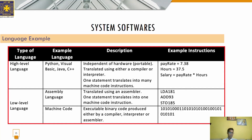An interpreter is a system program that translates the instructions of a high level language into machine-understandable language, but it considers one statement at a time and converts it to machine level language by executing it immediately. If it finds an error in a line, it stops there and never checks the next line until the error is fixed. The basic difference between the interpreter and compiler is that the interpreter interprets line by line while the compiler compiles the entire program. An example of an interpreter is the BASIC language.